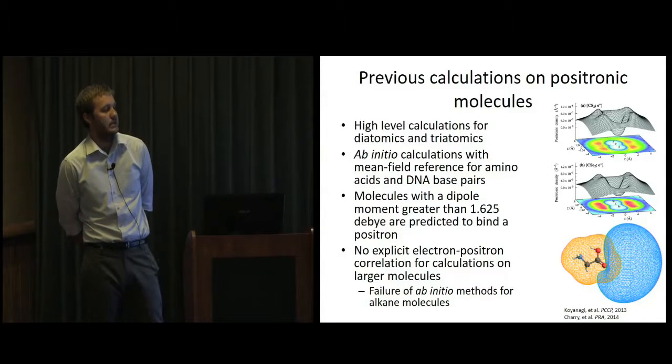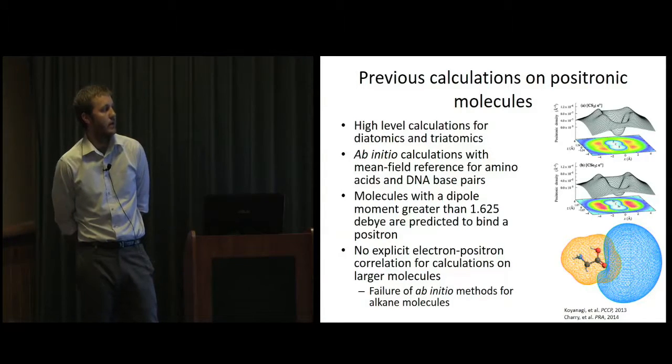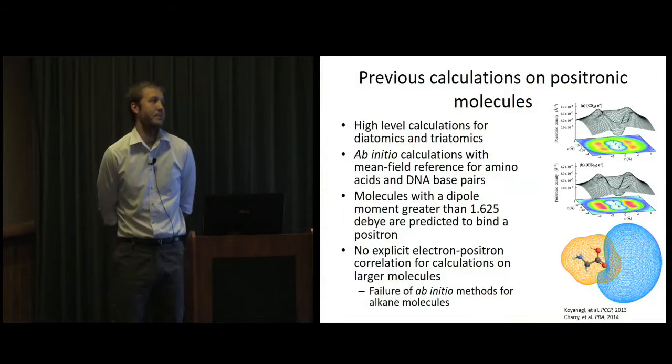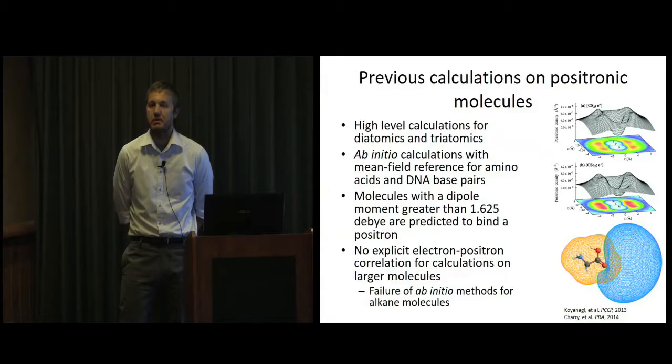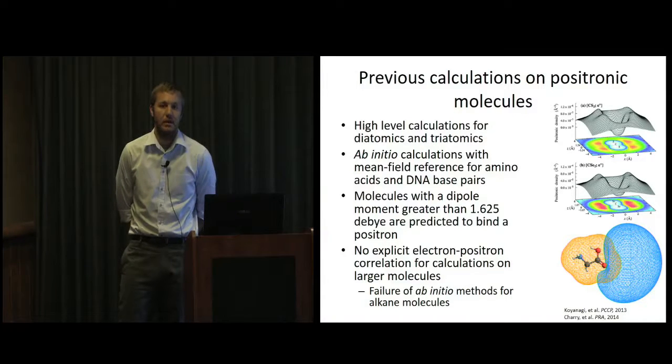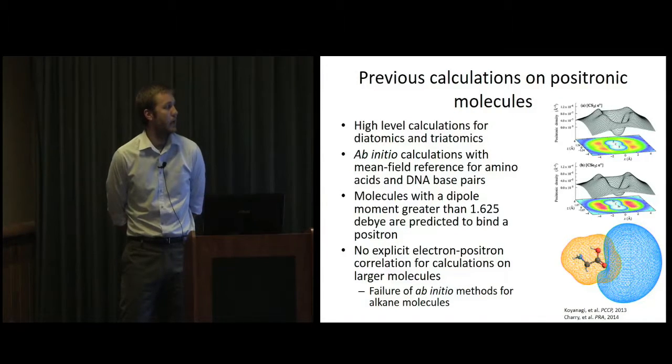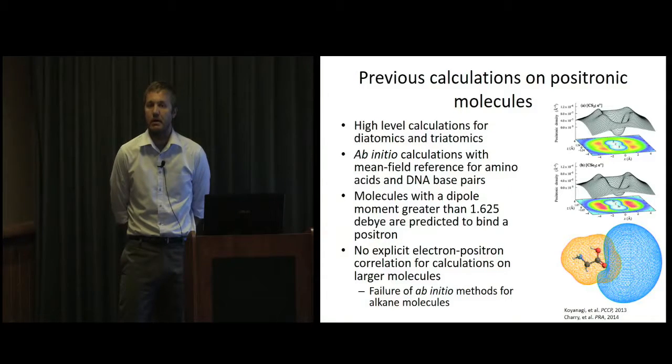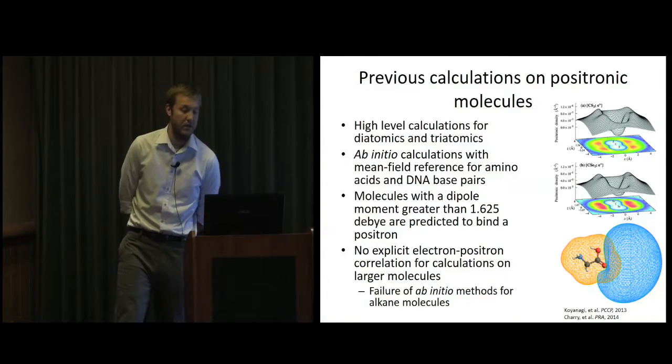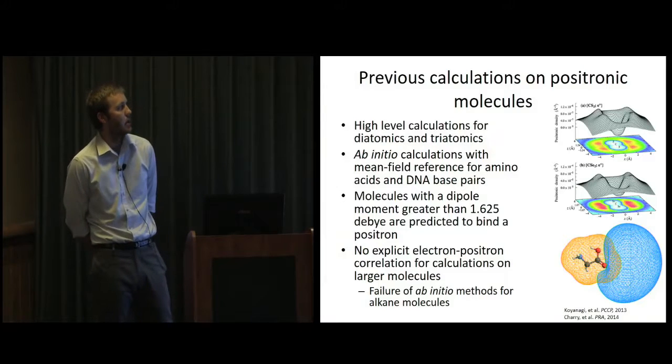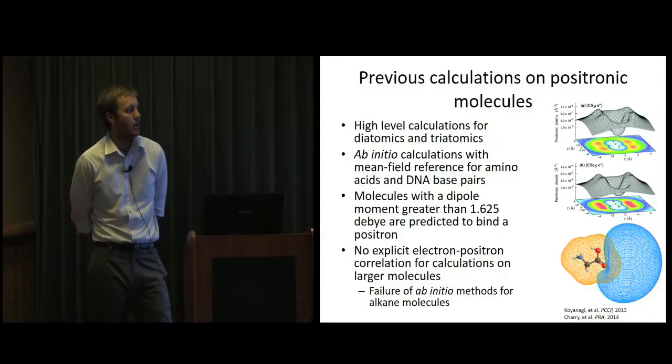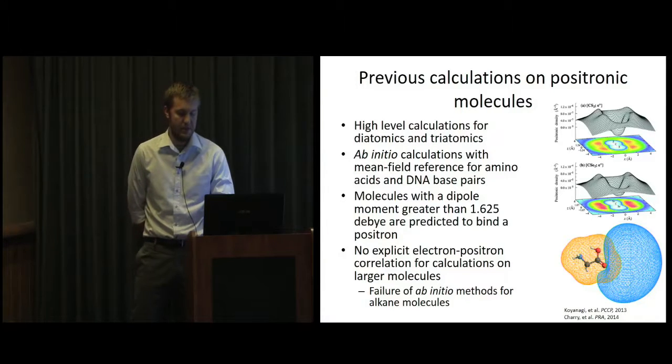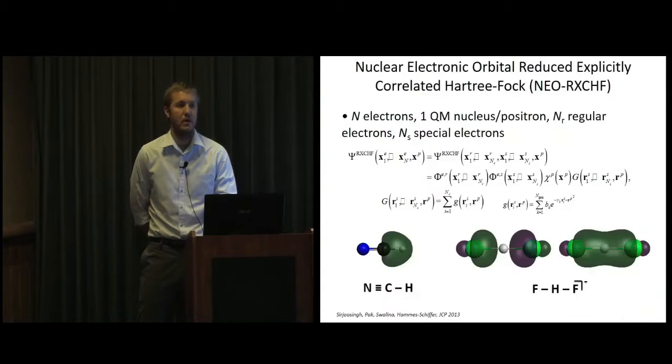So the RX-CHF method that I've mentioned on the first slide includes explicit electron-proton correlation because we're normally interested in molecular systems, but there's no reason we couldn't do positrons instead. And we should be able to do molecular-type systems. It would be computationally very demanding, but it would be reasonable. And so what we've recently done is adapted the RX-CHF method to positron-type systems, and we started by benchmarking on atoms before moving on to molecules.